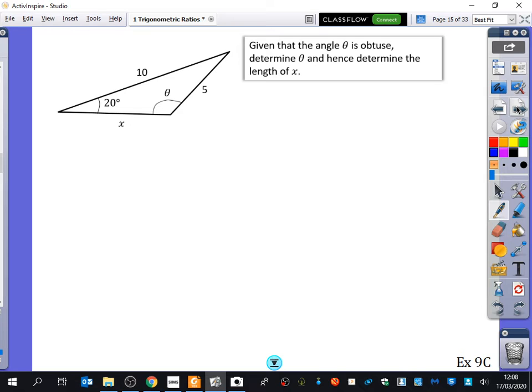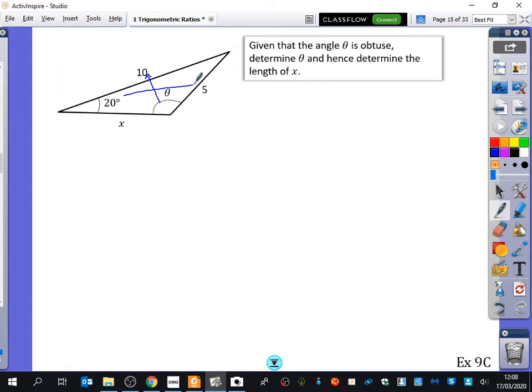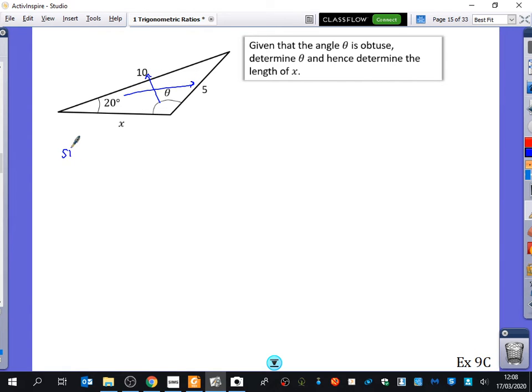The sine rule because I've got a pair here and I've also got a pair here. So I'm going to start off with sine theta over 10 equals sine 20 over 5. So sine theta is equal to 10 sine 20 over 5 which is just the same as 2 sine 20 because I can do the 10 divided by 5.